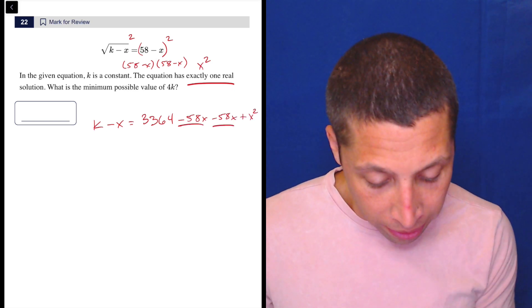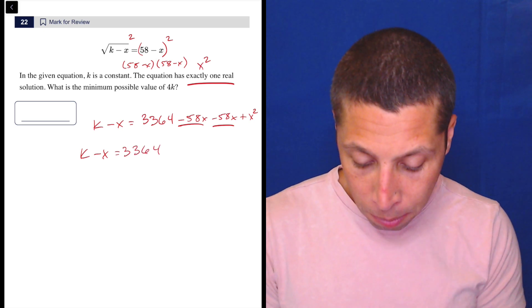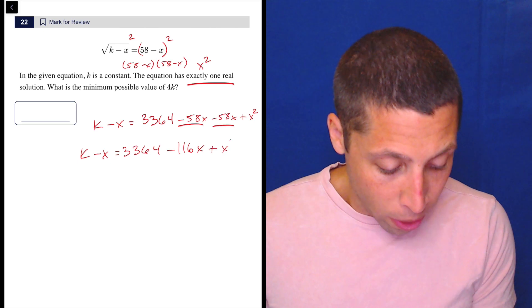And then that's minus 58x minus 58x plus x squared. So, let's just combine these first before we start doing too many moves here. So, 3364, 58 plus 58 is 116x plus x squared.